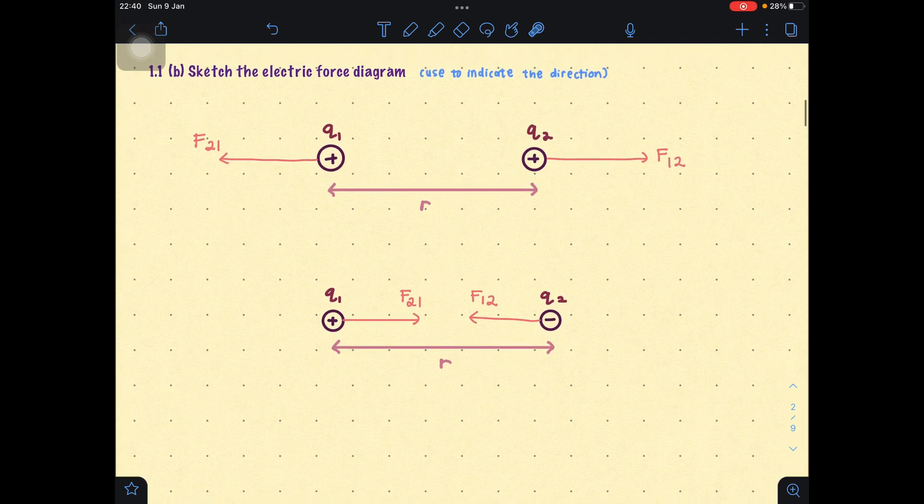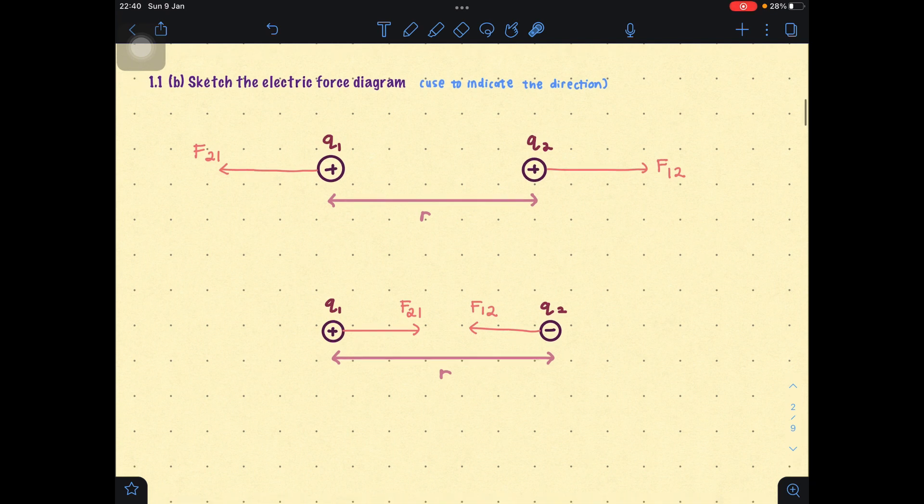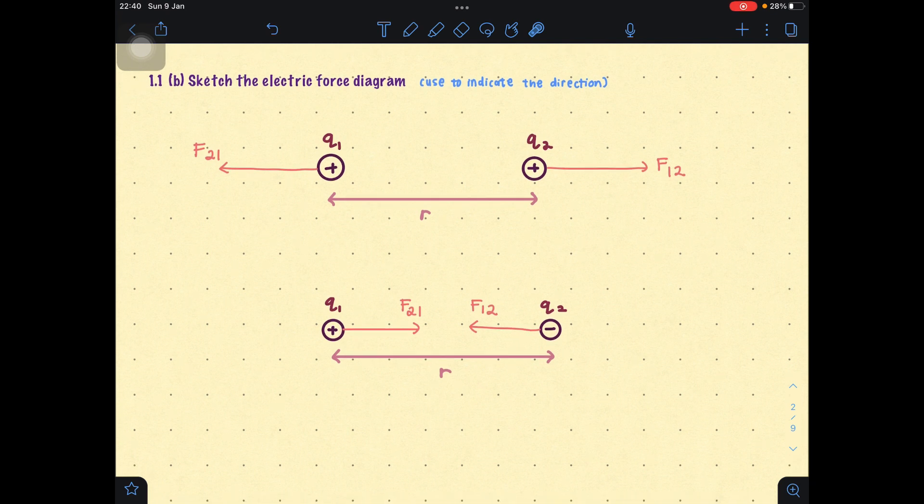This label is very important because sometimes the question will directly ask what is F₁₂. Although the magnitude will be the same, the direction will be different. So you need to be careful here. This is how you sketch the electric force diagram. That's all for this video. We are going to see the example in the next video.